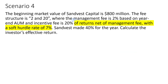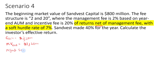For scenario four, the incentive fee is 20% of returns net of management fee, with a soft hurdle rate of 7%. In scenario three we saw the hard hurdle rate — now we have a soft hurdle rate. The gain for the year is $320 million and the market value at the end of the year is $1,120 million. Management fees are $22.4 million. The hurdle is $800 million times 7%, which is $56 million.